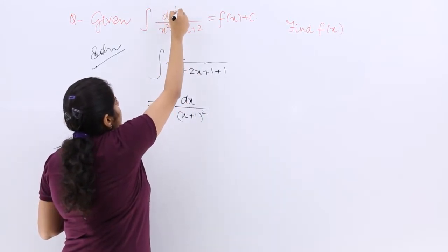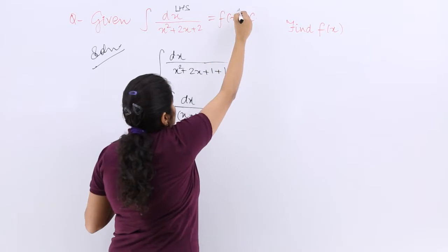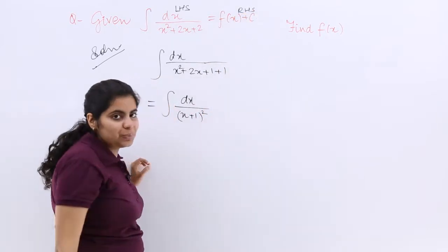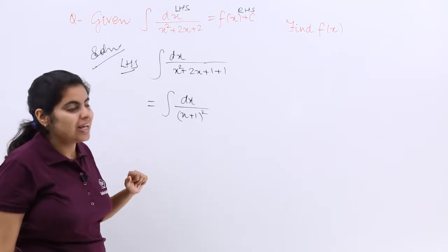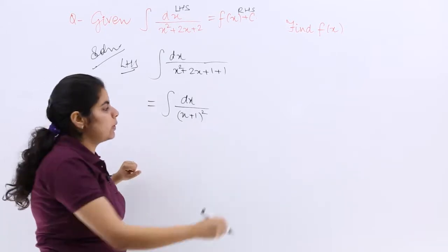I can write this expression here as LHS and here as RHS for my convenience. So what I am solving now is related to the left hand side of the question. Now x plus 1 whole square plus 1.